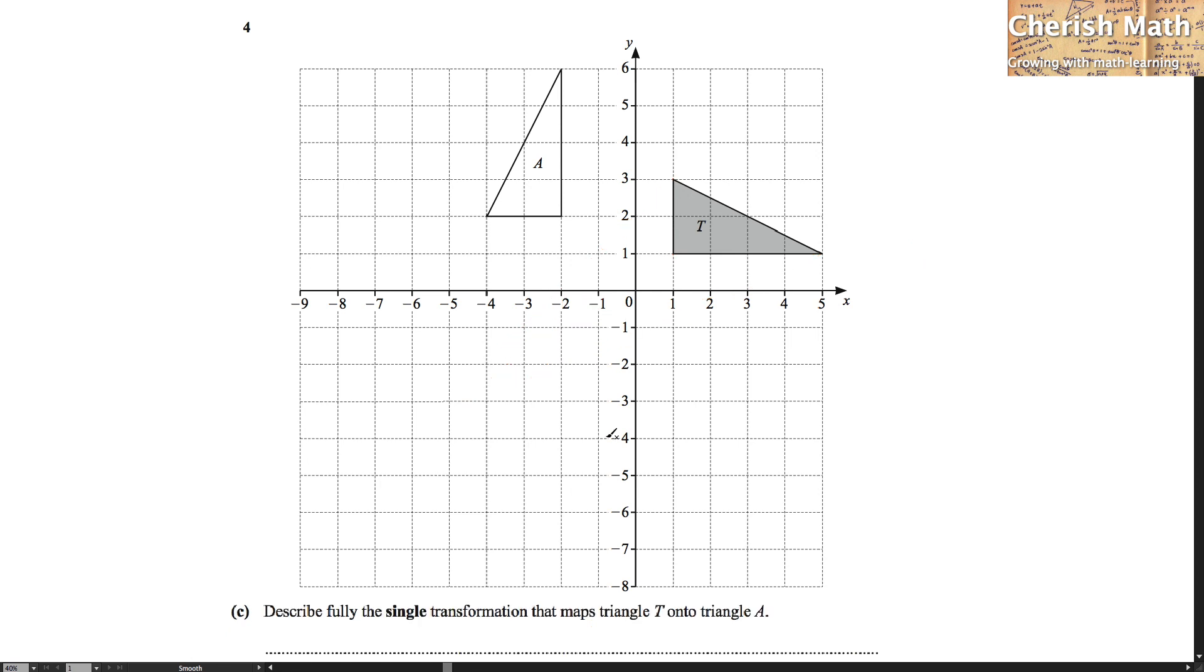Part C of question 4 is the last part of our question here. It reads as: describe fully the single transformation that maps triangle T onto triangle A. Now, the first thing to spot here is to find where is the coordinates of the center of transformation. Here is the answer.